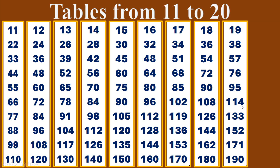19 sixes are 114. 19 sevens are 133. 19 eights are 152. 19 nines are 171. 19 tens are 190.